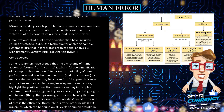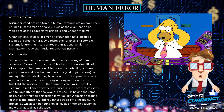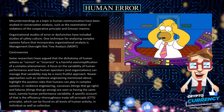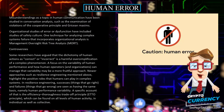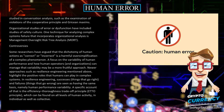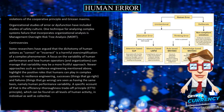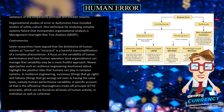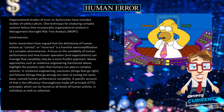In resilience engineering, successes — things that go right — and failures — things that go wrong — are seen as having the same basis, namely human performance variability. A specific account of that is the efficiency-thoroughness trade-off principle, or ETTO principle, which can be found on all levels of human activity, both individual and collective.